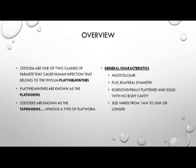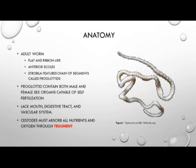General characteristics of tapeworms include being multicellular, flat with bilateral symmetry, and dorsoventrally flattened and solid with no body cavity. Size varies from one millimeter to 20 meters or longer. The adult worm is flat and ribbon-like with an anterior scolex, and the strobila features a chain of segments called proglottids, which contain both male and female sex organs capable of self-fertilization, making them hermaphroditic.